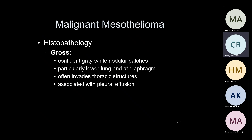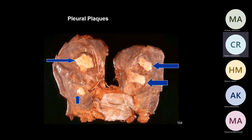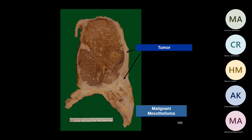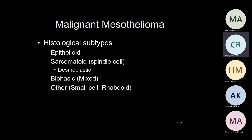This is malignant mesothelioma — the pleura is very thick, about a centimeter, with grossly invasive carcinoma. To call it malignant mesothelioma, you need to see invasive carcinoma, either grossly or microscopically. There are two histological types: epithelioid type and sarcomatoid type. The sarcomatoid or spindle cell type is much worse than epithelioid type. Even mesothelioma itself is a really bad tumor — one to two years survival. If you have sarcomatoid type, it's even worse.